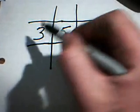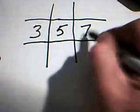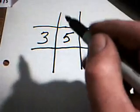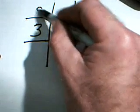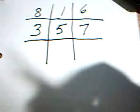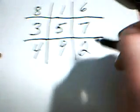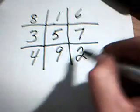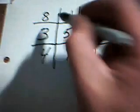Only one possible answer. 3, 7, 8, 1, 6, 4, 9, 2. You've got 1, 2, 3, 4, 5, 6, 7, 8, 9 — only use each number once.